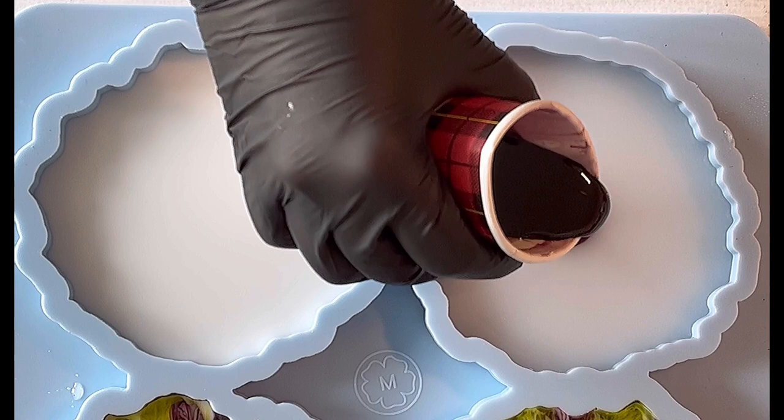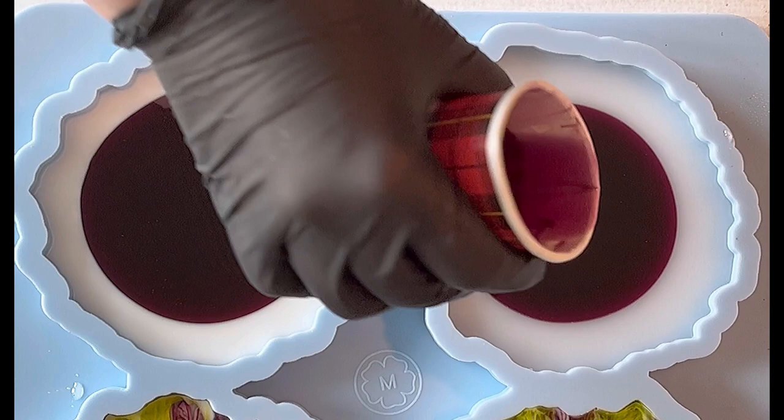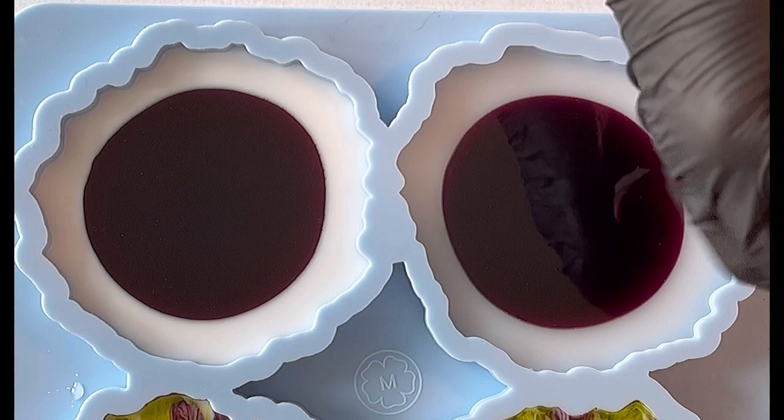By the way this is the deep geode irregular geode mold from Modes and Shapes. I used two of them and the other two there's something else inside. The resin I'm using is the Art Pro resin from the Resin Pro company. It's the resin I achieve the best results with, with many techniques.